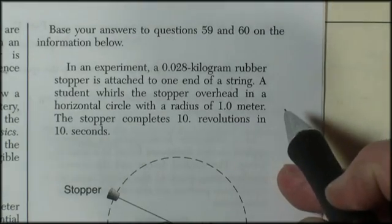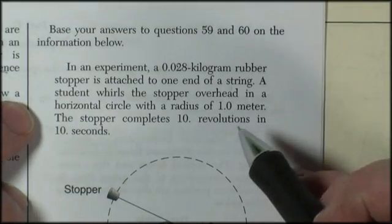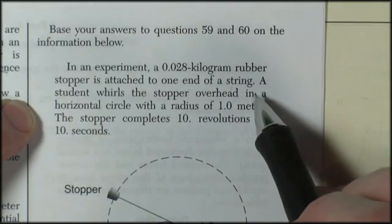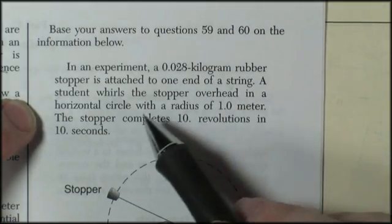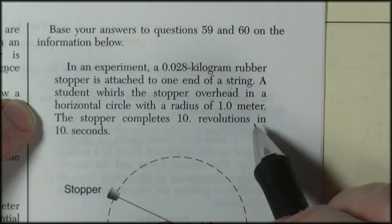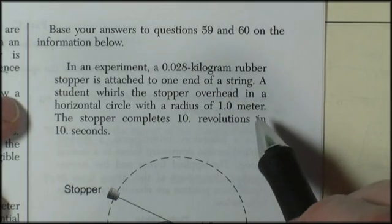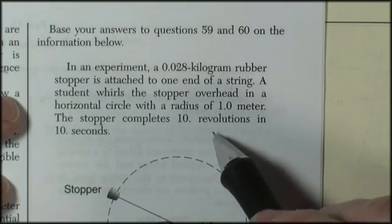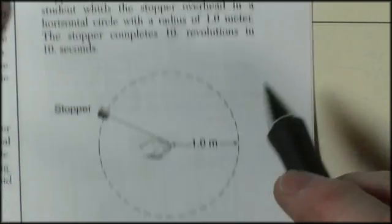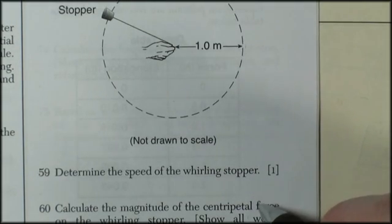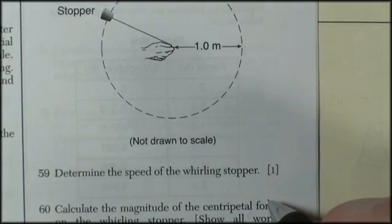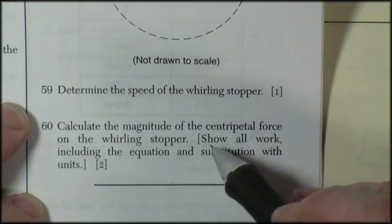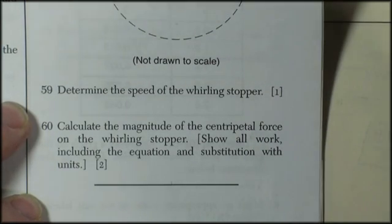Question 59 and 60 is based on the information below. Experiment at .028 kilogram rubber stopper attached to one end of a string. Student whirls a stopper overhead in a horizontal circle with a radius of 1 meter. We used to do a lab like this until kids started hitting themselves. So we stopped it. The stopper completes 10 revolutions in 10 seconds. Determine the speed of the whirling stopper for one point. Second one. Calculate the magnitude of the centripetal force on the whirling stopper. Show all work including the equation substitution with units.